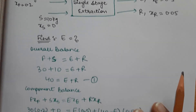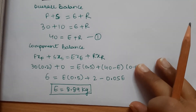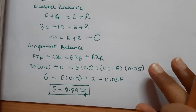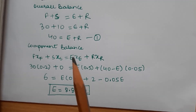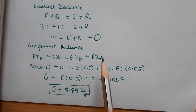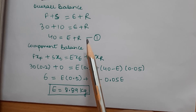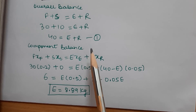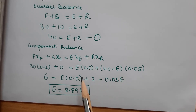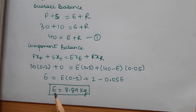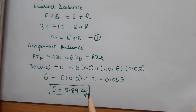Performing a component balance and substituting the value of R from equation 1, with all other values given, we solve to get the extract phase E = 8.89 kg.